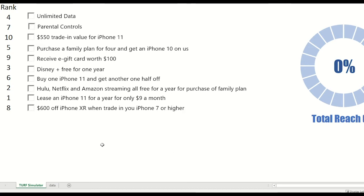First, we ran a max diff analysis to see which of these are the most and least appealing. As you can see in the ranking on the left-hand side, offering the lease on an iPhone 11 for only $9 a month is the most appealing, followed by Hulu, Netflix, and Amazon streaming for free for a year when you purchase a family plan. Naturally, what I'm tempted to do is activate these promotions and see what my reach will be.